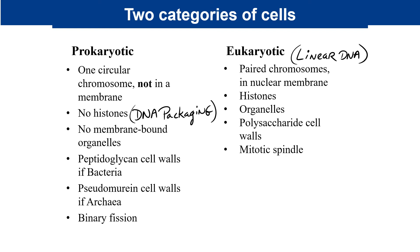Eukaryotic cells, by contrast, have organelles. They may have cell walls, but they're typically made up of polysaccharide — complex sugar-type chemical components. They also possess a mitotic spindle, which we'll look at towards the end of the chapter as we cover eukaryotes.